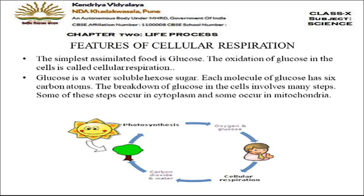The features, or steps, of cellular respiration begin with the simplest assimilated food — glucose. After digestion, food is absorbed in the small intestine and circulated to all cells via blood. The simplest form of assimilated food in the body is glucose, and the oxidation of glucose is cellular respiration. Glucose is a water-soluble hexose sugar — 'hexose' meaning it consists of six carbon atoms. The breakdown of glucose in cells involves many reactions.